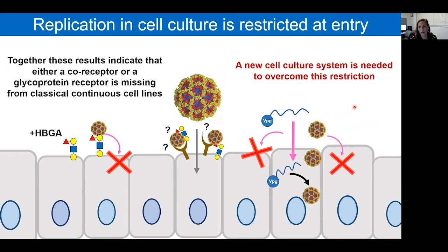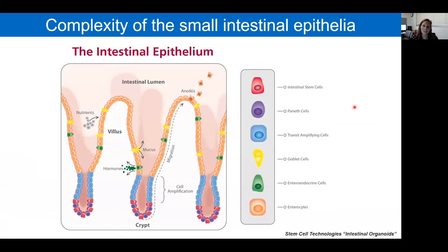Norovirus affects the small intestinal epithelia, so it would be great to have an intestinal cell culture system, which has been difficult to achieve. The intestine is complex—it's comprised of villi and crypt regions. The crypts contain stem cells which differentiate into the other cell types found in the small intestine, interspersed with Paneth cells that secrete antimicrobial and proliferative factors. The villi contain differentiated cell types like goblet cells, enteroendocrine cells, and enterocytes.